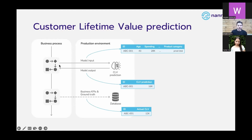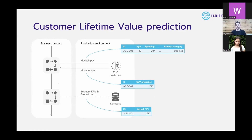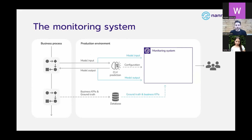As we do those things, we gather more information about these customers — for instance, what their actual customer lifetime value ended up being, the ground truth, if that's available, but also potentially some business KPIs. We can look at the effectiveness of campaigns, see the behavior of these customers, segment them, and analyze them further. This is ideally information that we capture and feed to our monitoring system.